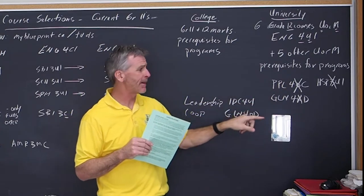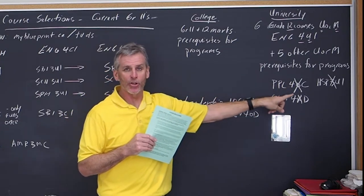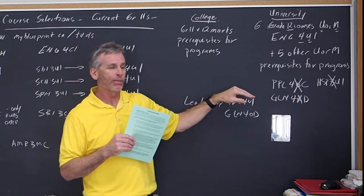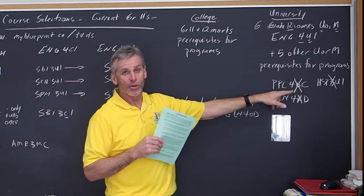Notice I've cut three courses up here. The gym does not count because it's an open level credit. So a lot of students make the mistake by choosing gym, but you can't use it to apply to university because it is an open level course.